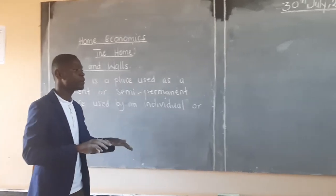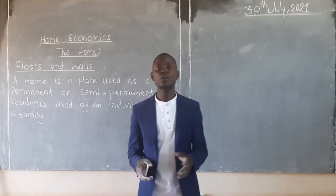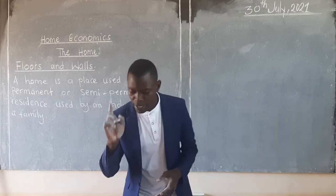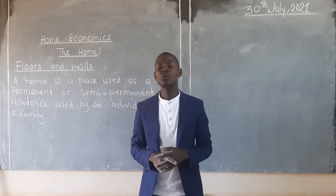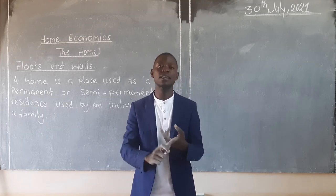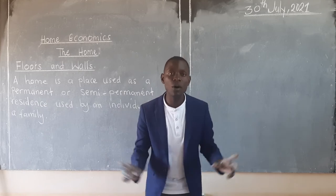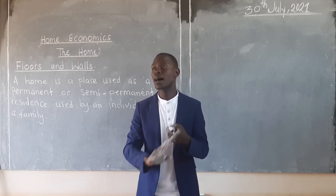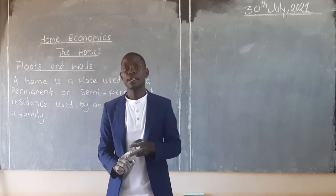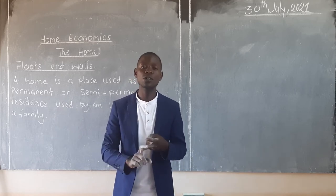A home can be permanent to you and also as a family. Sometimes you can be there for quite some time and then later on you shift. Now in the same home, a home should have different things — a home should have rooms. In the same rooms, or in the same home or house, it should have floors and walls. Now we have types of floors and walls.